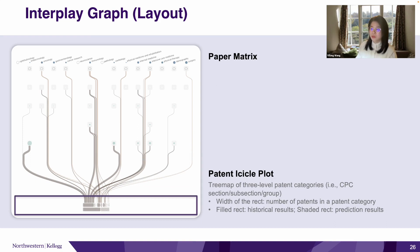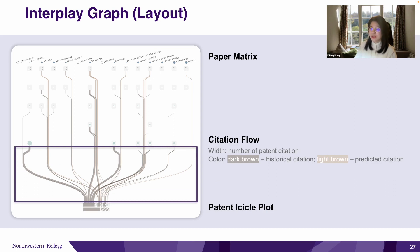The patent icicle plot uses an upturned icicle plot to summarize the patent categories from a three-level hierarchy. Each rectangle represents a patent category, with length encoding the number of patents in that category. The citation flow visualizes citations from patents to papers. The flows start from the patent icicle plot and first converge at each paper field at the bottom of the paper matrix. Then, flows in each paper field diverge to each paper cell.